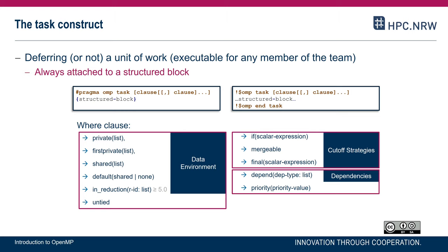A task in OpenMP is a unit of work that can run on its own because it also has a data environment — local data and references to shared data. It consists of a certain code, basically the structured block of the task plus everything called from within. A task can be executed immediately when it is encountered by one thread, or its execution can be deferred, meaning it will be executed later, possibly by a different thread.